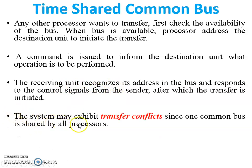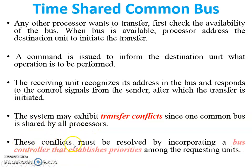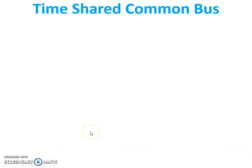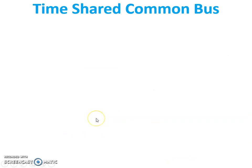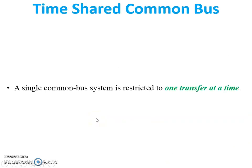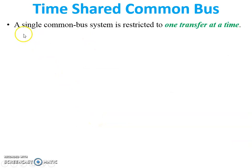The system may exhibit transfer conflicts since one common bus is shared by all processors. These conflicts must be resolved by incorporating a bus controller that establishes priorities among the requesting units. This is the limitation of a single bus time-shared common bus system.